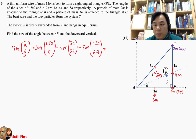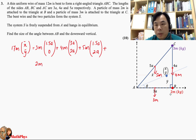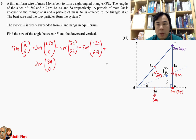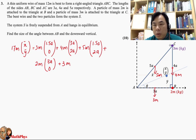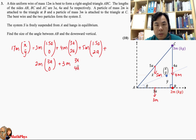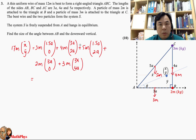We also include the two particles. The particle of mass 2M at B is located at (3A, 0). The particle of mass 3M at C is located at (3A, 4A).